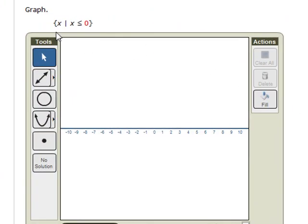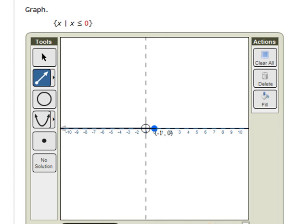Let's graph the inequality x such that x is less than or equal to 0. We're going to choose the ray option, start with the endpoint, which is at 0, and then we want to choose the x values that are less than or equal to 0. Now to get this to stick, we have to put a point somewhere to the left of 0.